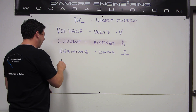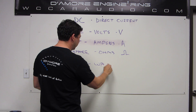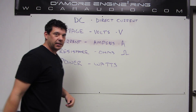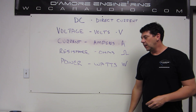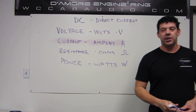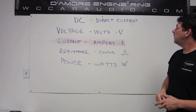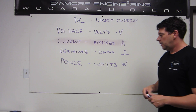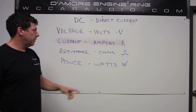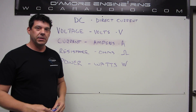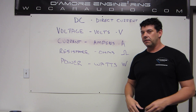And one more: power. That's measured in watts, the symbol is a capital W, and it's named after a Scottish engineer, James Watt, who also lived in that same time period. The relationship of these things — the guy who did resistance, Mr. Ohm — he also put together the relationship for all this, and that's called Ohm's Law.